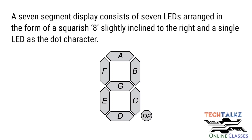Our 7-segment display, based on the inputs, has segments labelled A, B, C, D, E, F, and G. There is also a common input. This display comes in two types: common anode and common cathode.